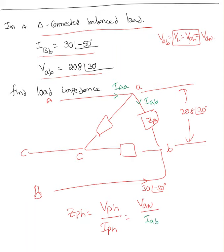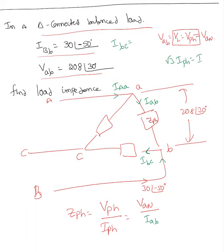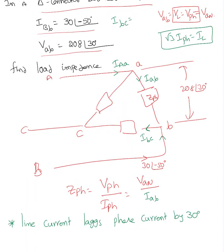From IBB I can find IBC. In delta connection, square root 3 times IPH equals line current. One more statement to remember: line current lags the phase current by 30 degrees.